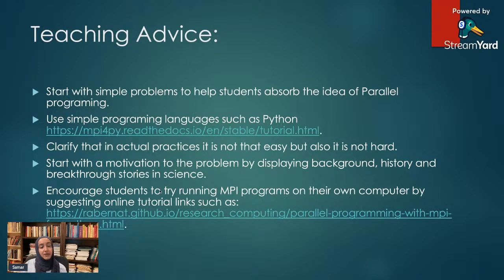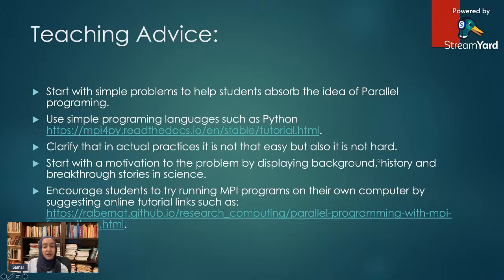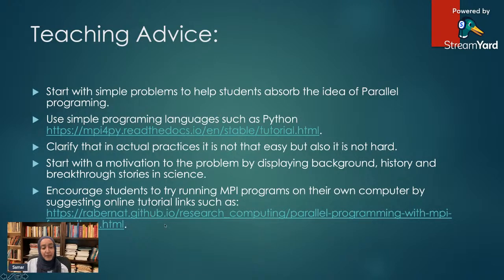Advice for teaching: start with simple problems to help students observe the idea of parallel programming. Use simple programming languages such as Python. Clarify that in actual practice it is not that easy, but also not hard. Start with motivation by displaying background history and breakthrough stories in science. Encourage students to try running MPI programs on their own computer by suggesting online tutorial links such as the one shown here, and I will copy all the links in the description box.